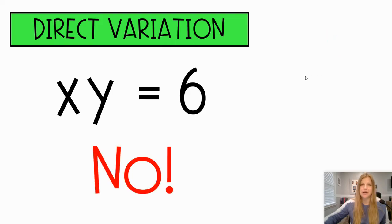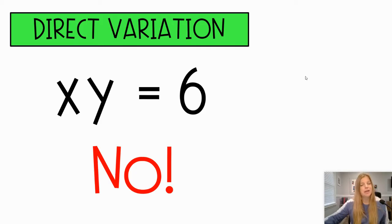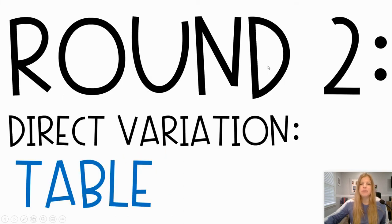The last one is certainly not a direct variation — it's actually an inverse variation that you're going to learn later in the school year. This one: xy equals 6. If I divide both sides by x, I get y equals six over x, which is definitely not in the form of y equals kx because the k and the x have to multiply. So that's a big indicator it's not a direct variation.